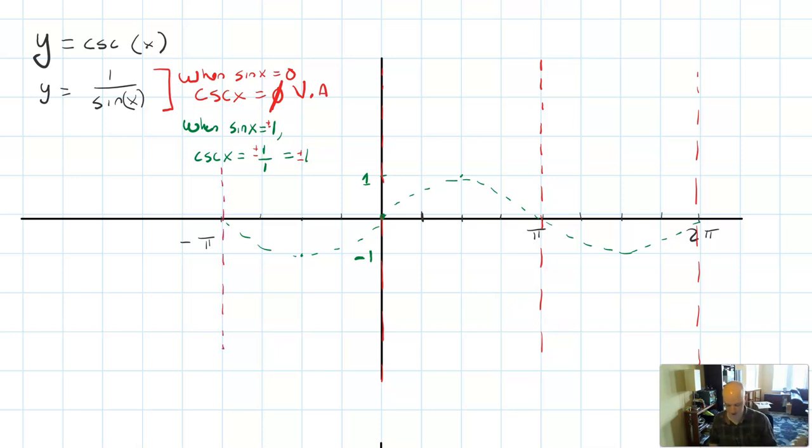Cosecant, the reciprocal of sine, should be undefined. It should have a vertical asymptote there. So I'll go ahead and plot those as vertical asymptotes for cosecant.